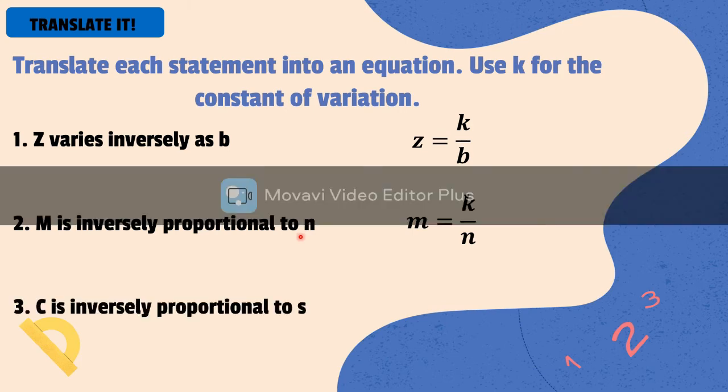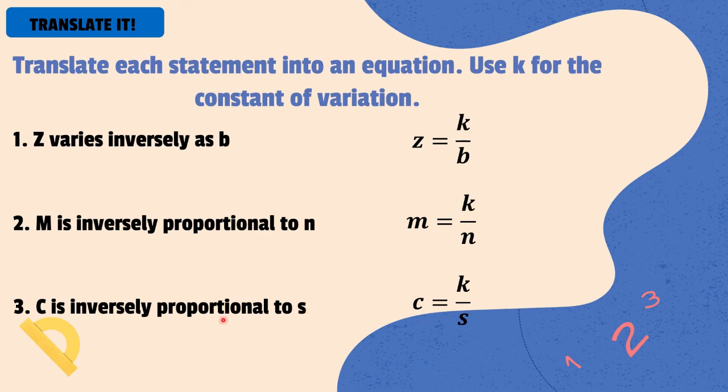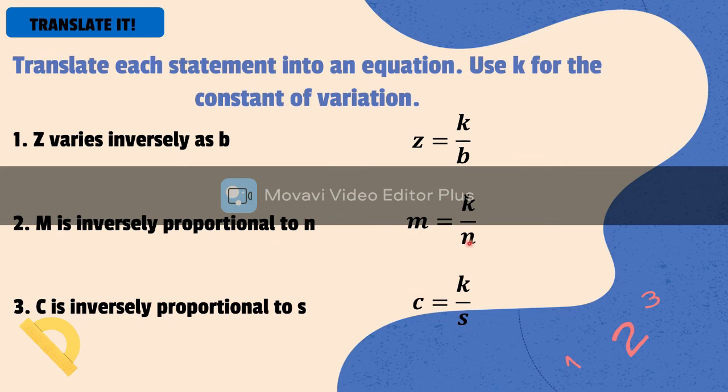As an example of translation, we have c is inversely proportional to s. So, our equation will be this: c is the first variable isolated. So, it's equal to k divided by s. So, this is one of the examples of translating each statement into equation.